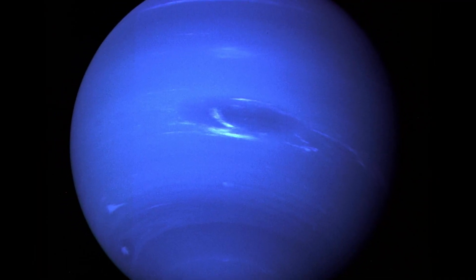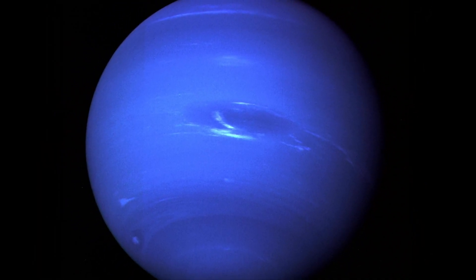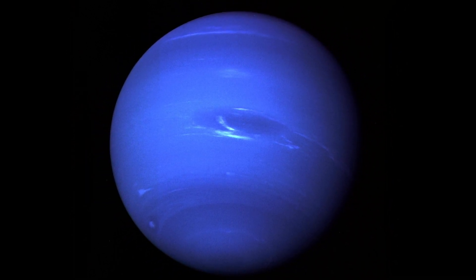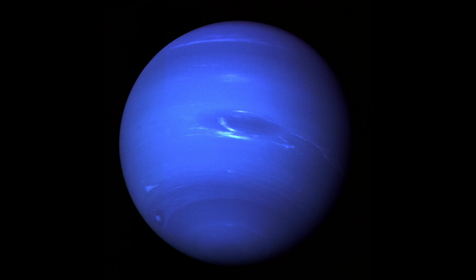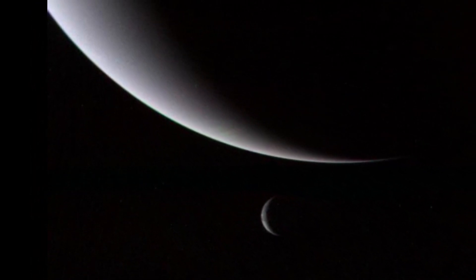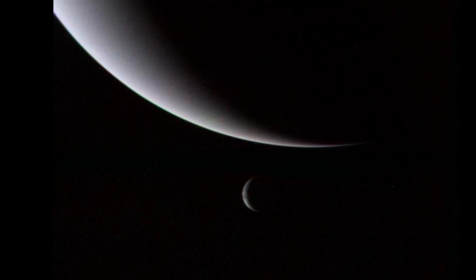Dark, cold and whipped by supersonic winds, ice giant Neptune is the 8th and most distant planet in our solar system. However, recently scientists have discovered some hidden wonders, so let's jump right into the video.